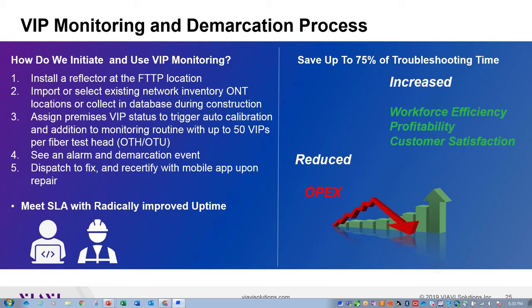The goal is to meet SLAs and radically improve uptime — saving 50–75% of troubleshooting time and reducing truck rolls by finding problems remotely. This increases efficiency, profitability, and customer satisfaction, as VIP customers experience much better uptime and less disruption to their business.